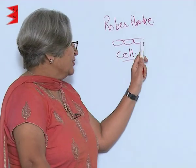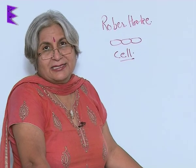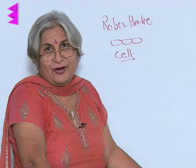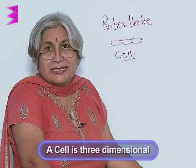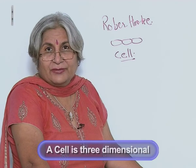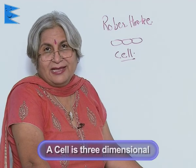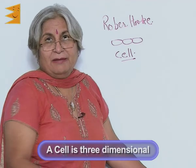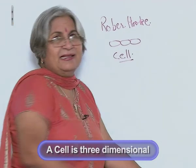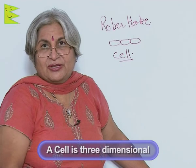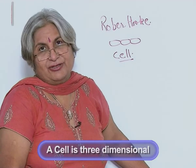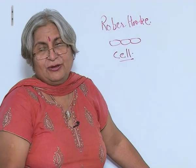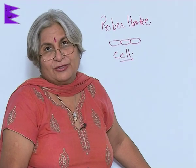Now looking at this you may think that a cell is a two-dimensional thing. That's not true. A cell is like a room — it is three-dimensional. There is length, breadth, and height. Imagine yourself sitting inside this cell. So a cell is three-dimensional: there is thickness, there is length, and there is breadth.